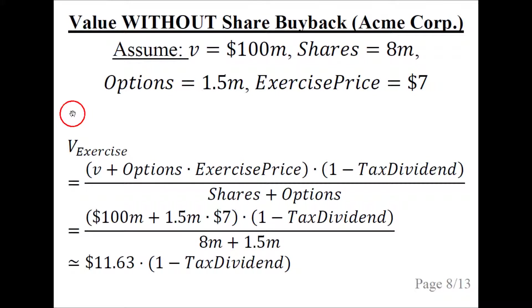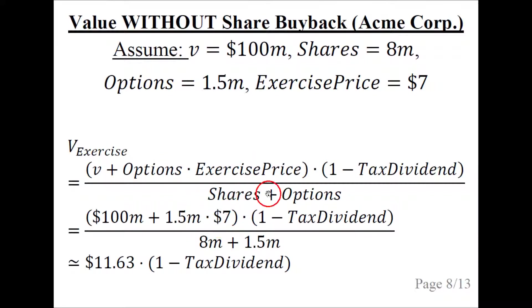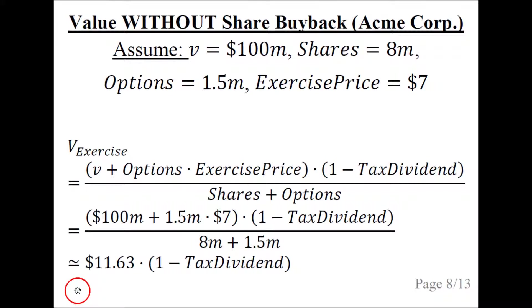The value without a share buyback but with the stock options exercised uses the formula from a previous slide. We plug in the numbers: V is $100 million, options is 1.5 million, exercise price is $7, number of shares is 8 million, and number of options is again 1.5 million. We leave the dividend taxation as a variable since it will factor out on a following slide. The result is a value per share of about $11.63 when we don't make a share buyback, but the stock options are exercised and cause dilution.